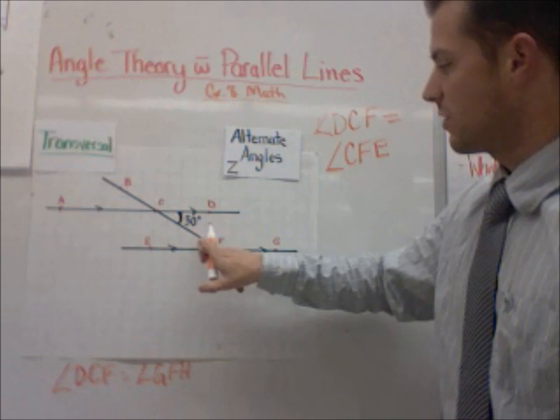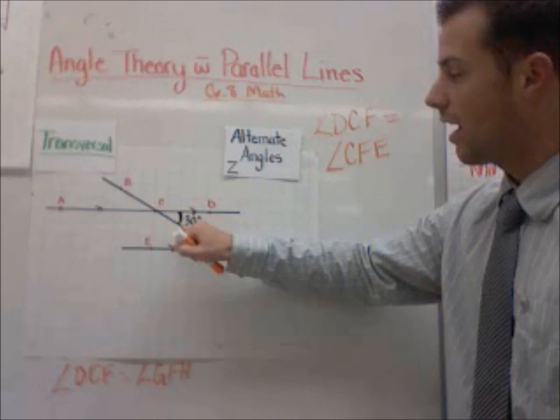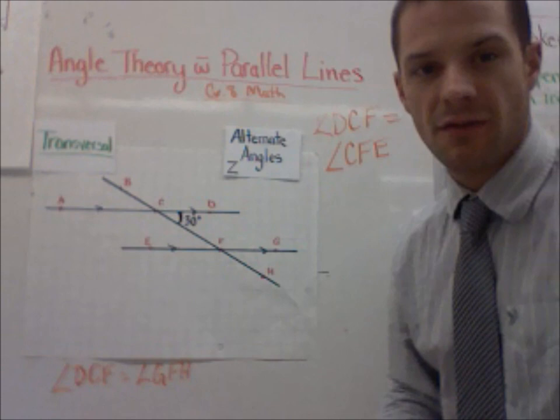We're filling in this blank. So angle DCF is equal to angle CFE. We're going this way, measuring this angle and this angle. They're alternate angles. And they are actually alternate of each other on the transversal. So the name kind of makes sense.